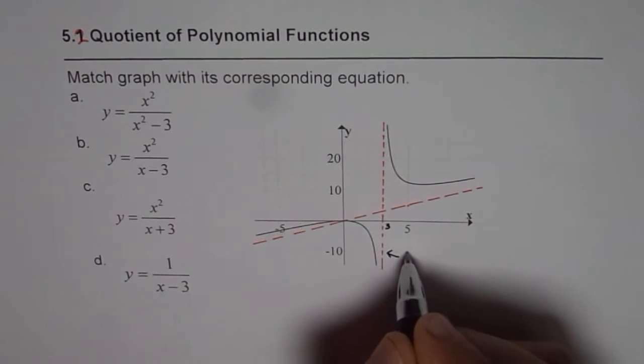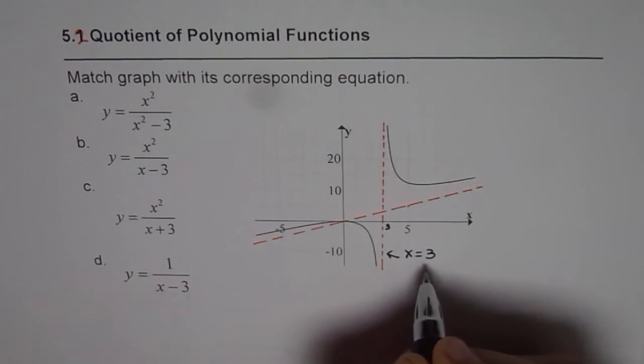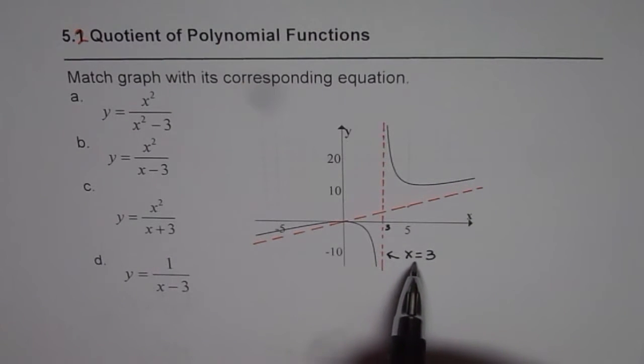The vertical asymptote for us is x equals to 3. That means if I substitute 3 in the denominator, it should become 0. So, 3 in the denominator should make it 0. That is my option.